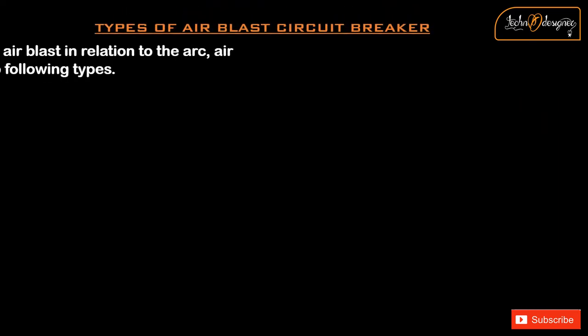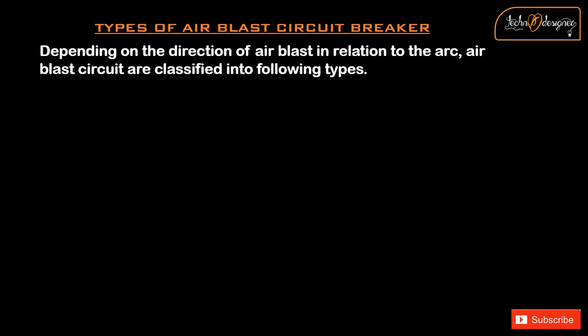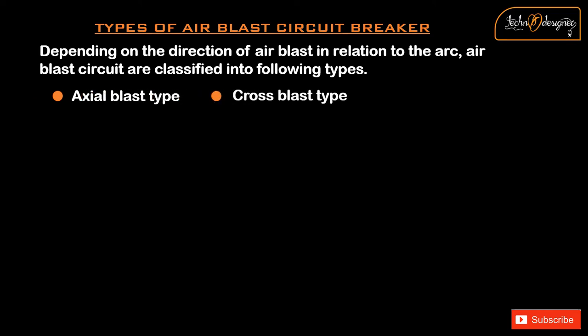Types of airblast circuit breaker: Depending on the direction of airblast in relation to the arc, airblast circuit breakers are classified into the following types: Axial blast type, Cross blast type, and Radial blast type.